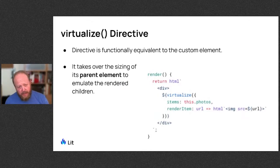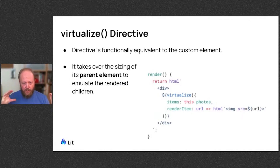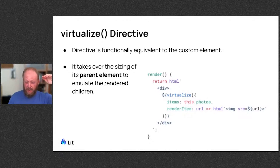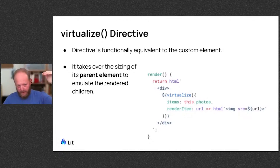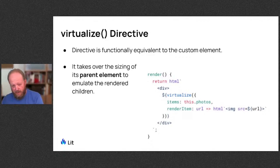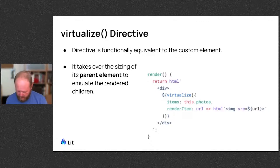We also provide a directive which is identical to the lit-virtualizer custom element. You might want to use this if you're doing something inside an element that semantically doesn't work with a lit-virtualizer element — like ULs and LI tags — or if you don't want to bring in the lit element base class and just want the virtualization capability. You can keep your imports smaller that way.